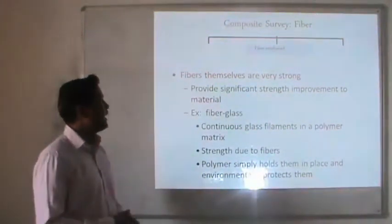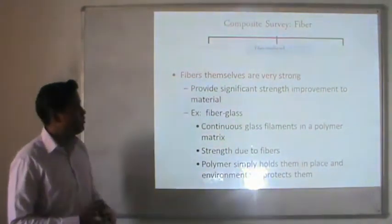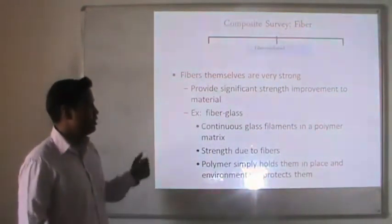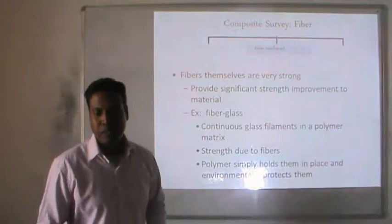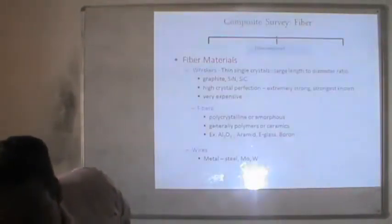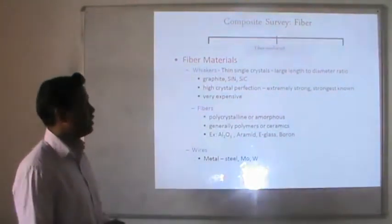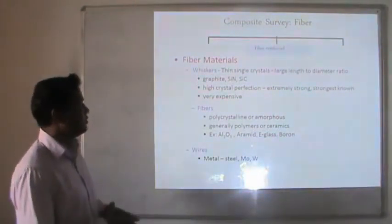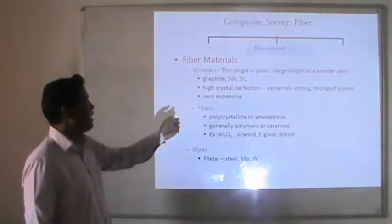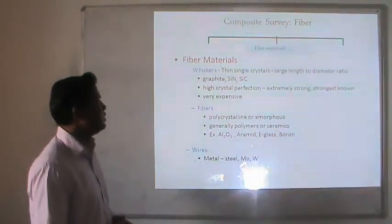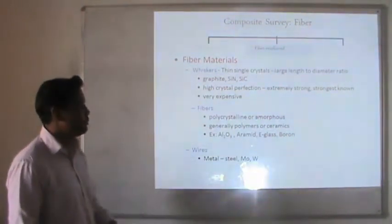Fiber reinforcement examples: fibers themselves are very strong and provide significant strength improvement to the material. For example, fiber glass consists of continuous glass filament in a polymer matrix — the fibers provide strength while polymers hold them in place and protect them from the environment. Fiber materials include whiskers (thin crystal structures with large length-to-diameter ratio, e.g., graphite, silicon nitride, silicon carbide — high crystalline perfection but very expensive), polycrystalline or amorphous fibers (generally polymers or ceramics, e.g., alumina, aramids, E-glass, boron), and wires (metal: steel, aluminum, tungsten).